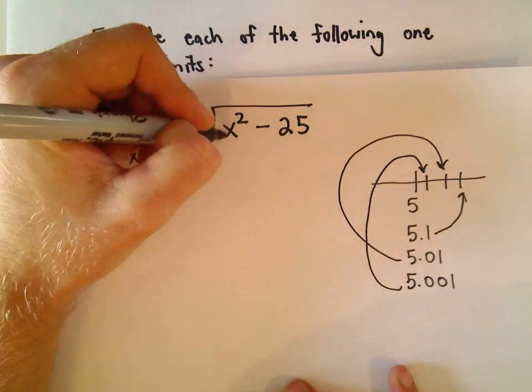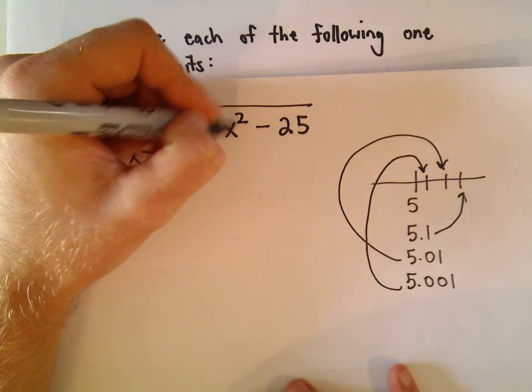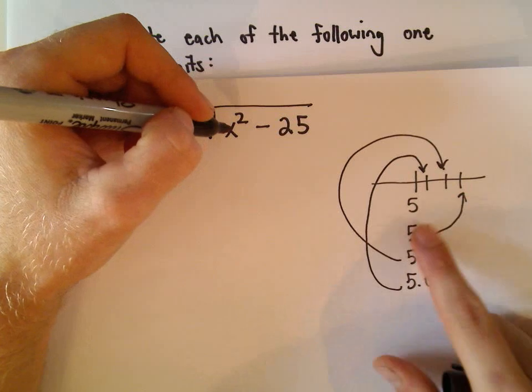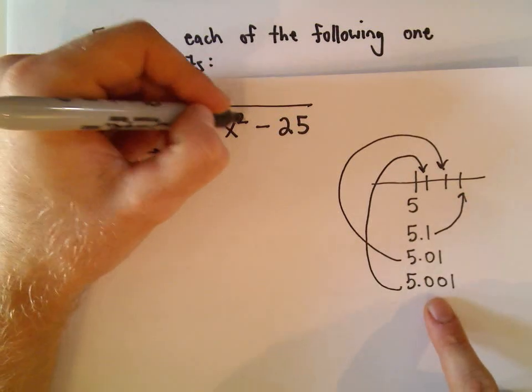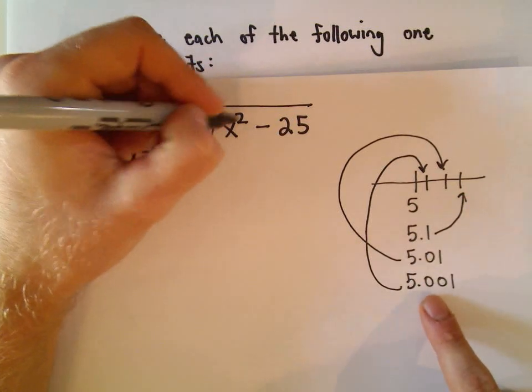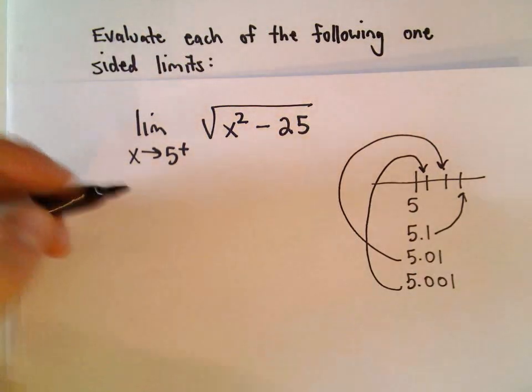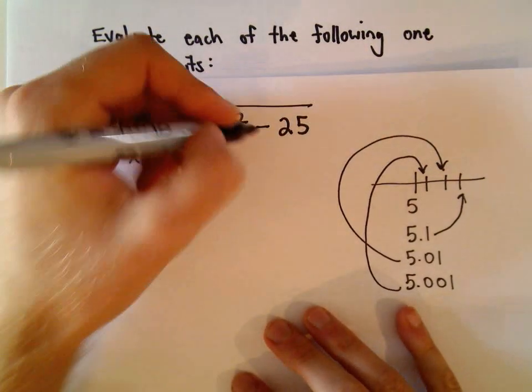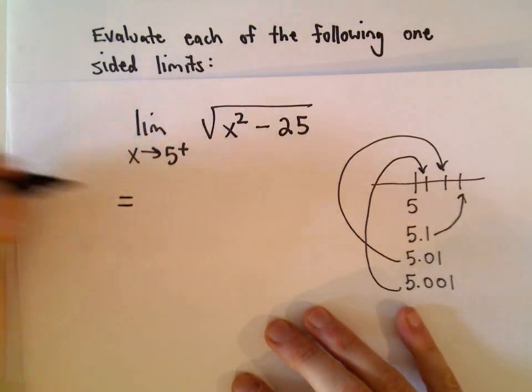Well if I take numbers a little bit bigger than 5 and square them, as they get closer to 5 the number that I'm squaring is going to get closer to 25 and if you subtract 25 it's going to get closer to 0.